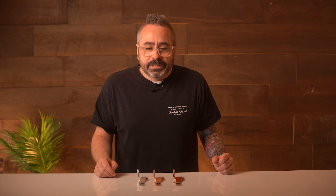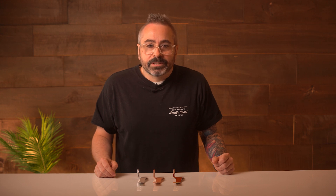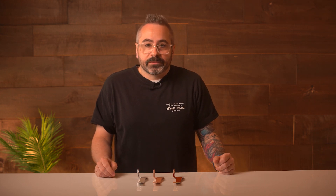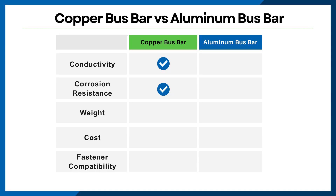When it comes to corrosion resistance, copper once again stands out as the better choice. Although aluminum can be treated to improve its corrosion resistance, copper naturally is more resistant to corrosion.